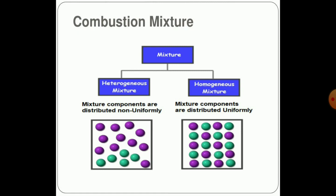The fuel used in an SI engine is a mixture — both heterogeneous and homogeneous. In a heterogeneous mixture, the components are distributed non-uniformly. In a homogeneous mixture, the components are distributed uniformly.